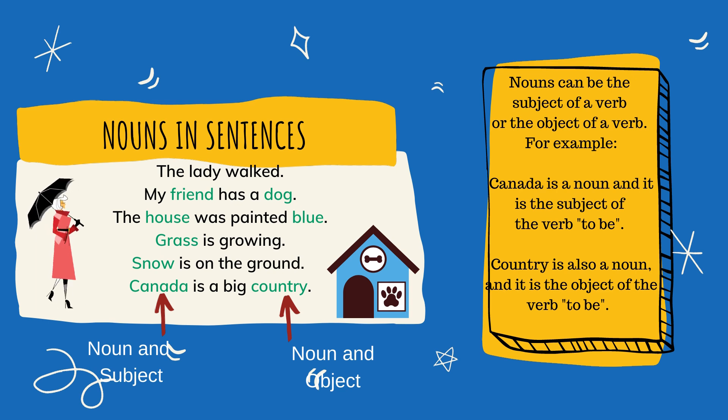Let's take a look at nouns in a sentence. The lady walked — the noun is the lady; the sentence is about the lady. What did she do? She walked. My friend has a dog. The sentence is about the noun my friend. My friend is the subject of the sentence. What does she have? She has a dog. The house was painted blue. The noun is the house; the noun is the subject of the sentence. What was it painted? It was painted blue.